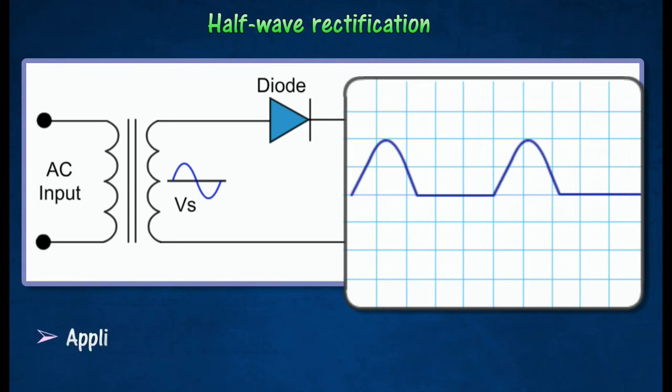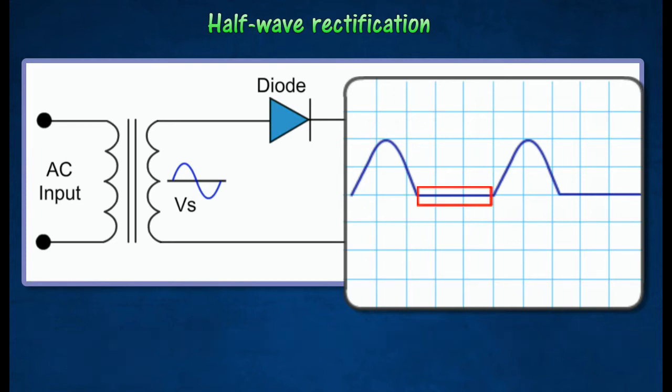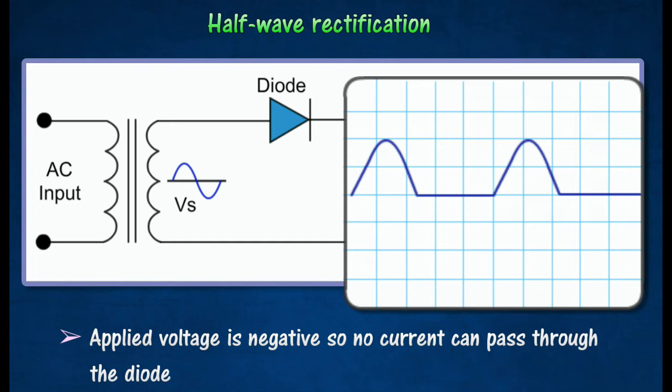During the first half cycle, the applied voltage is positive, so current is allowed to pass through the diode. During the second half cycle, the applied voltage is negative, so no current can pass through the diode. Therefore, a diode allows current to pass through in one direction only for the first half cycle.